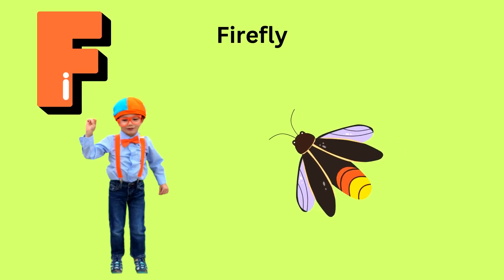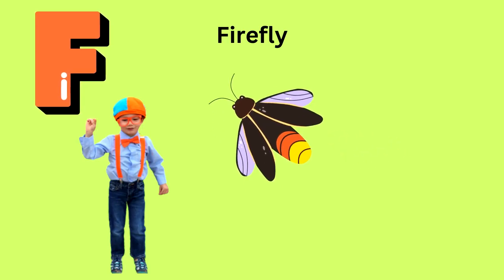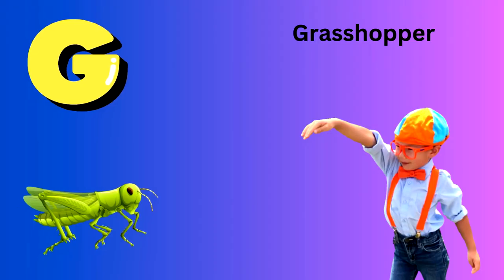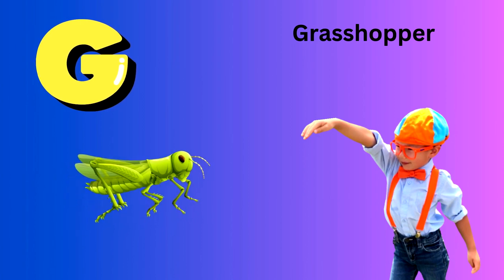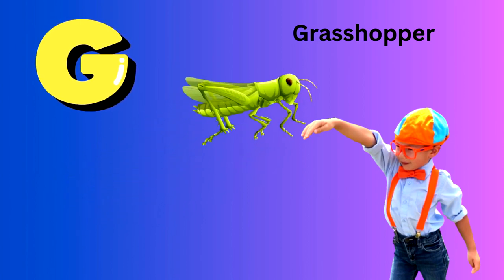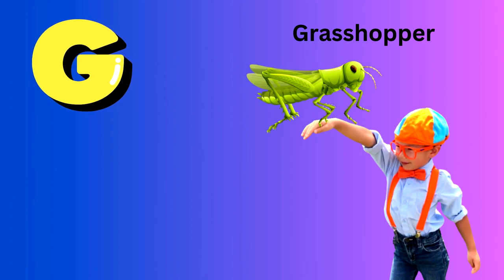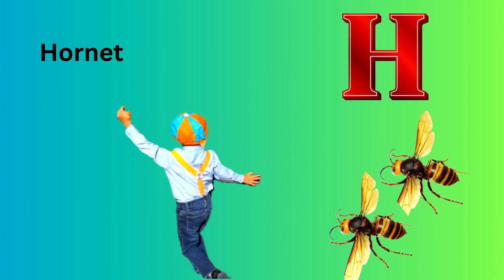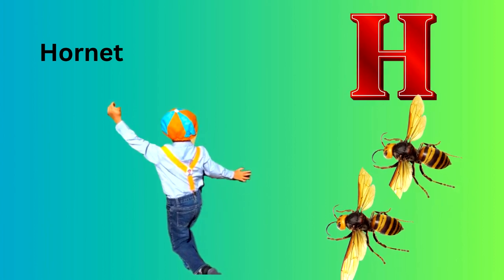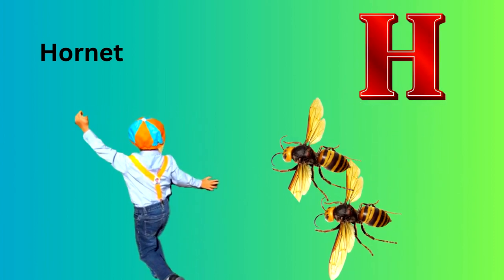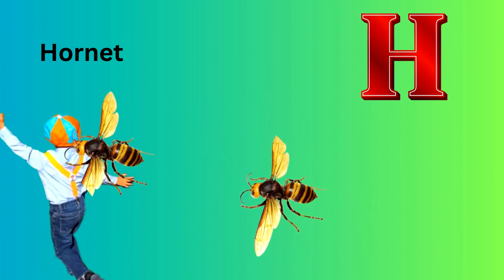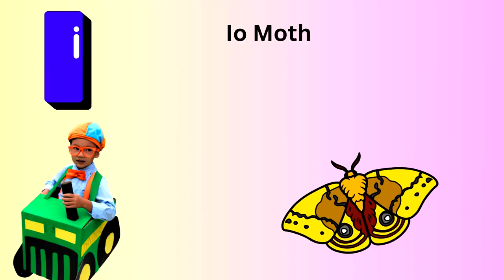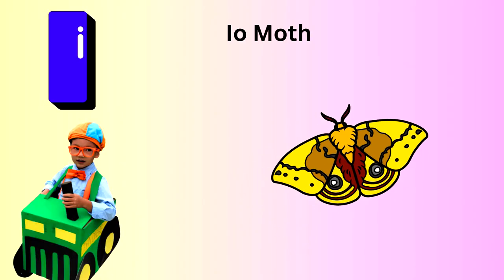F is for Firefly. G is for Grasshopper. H is for Hornet. I is for Io Moth.